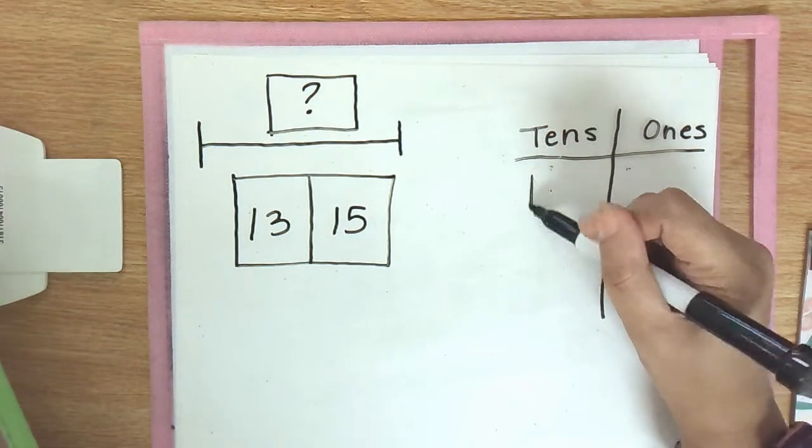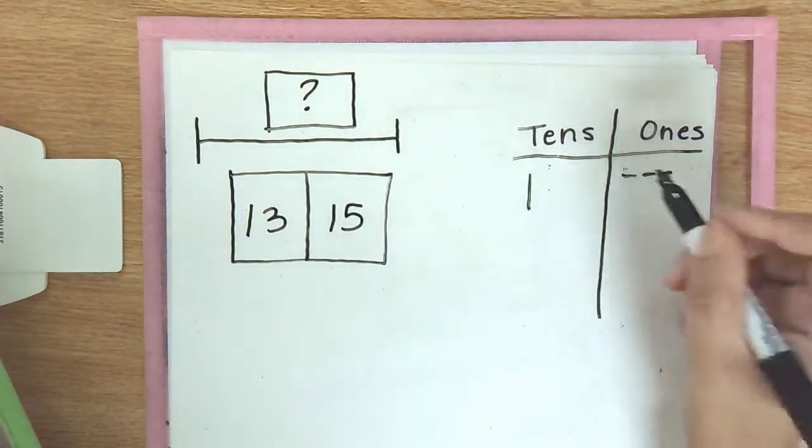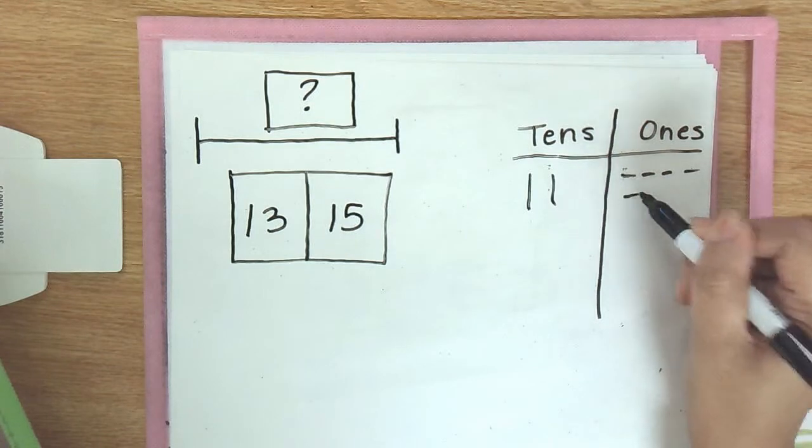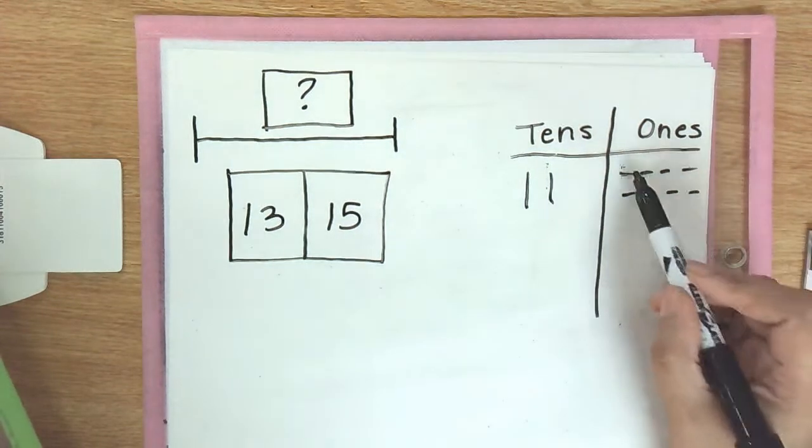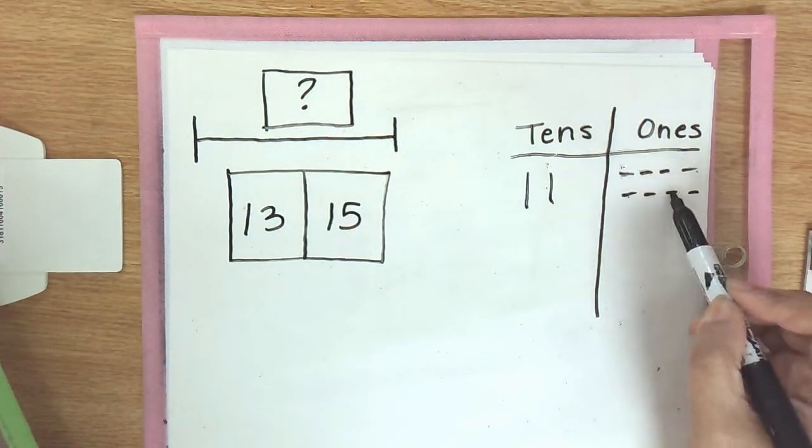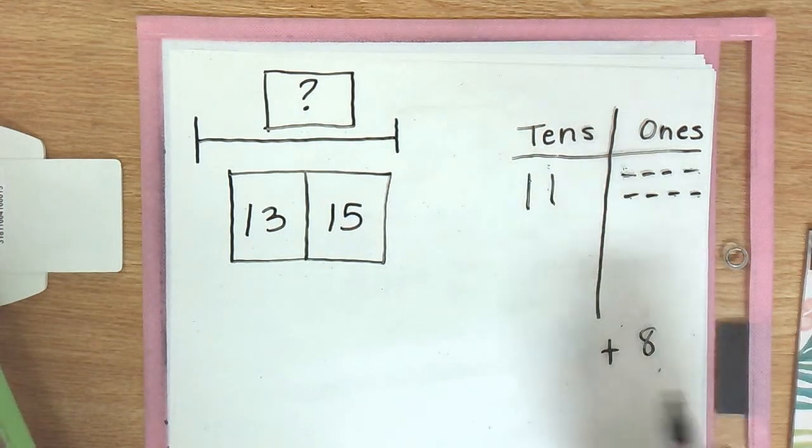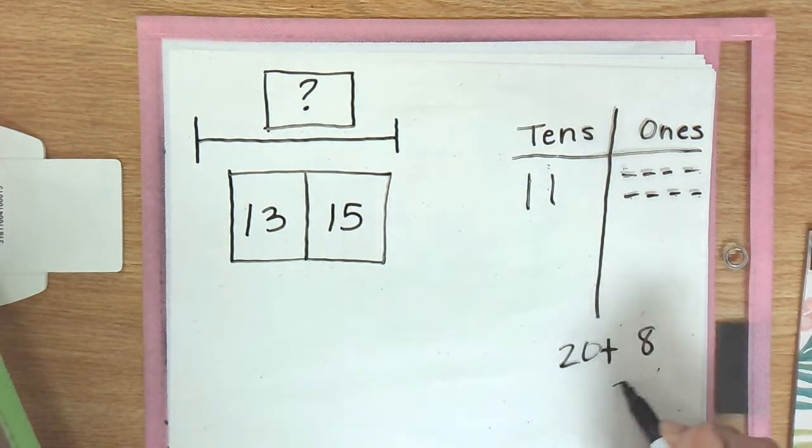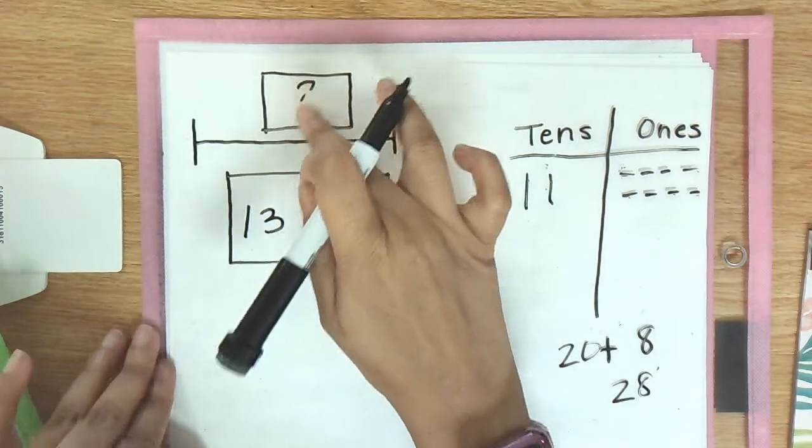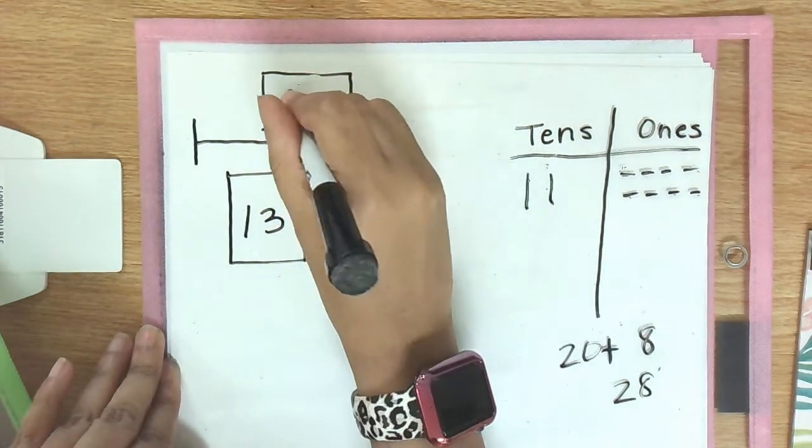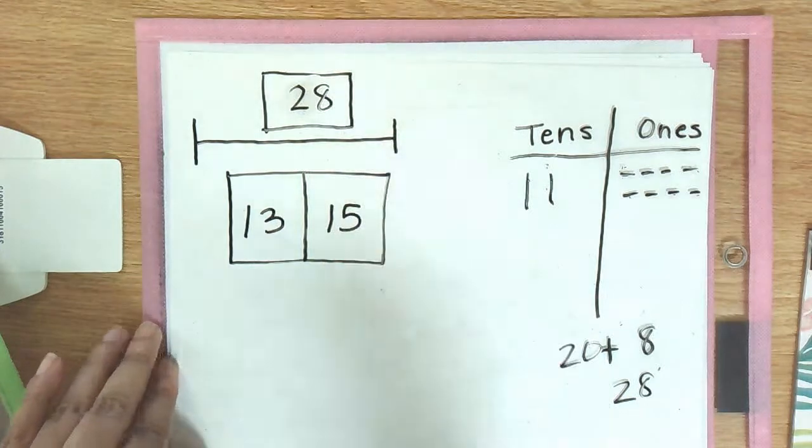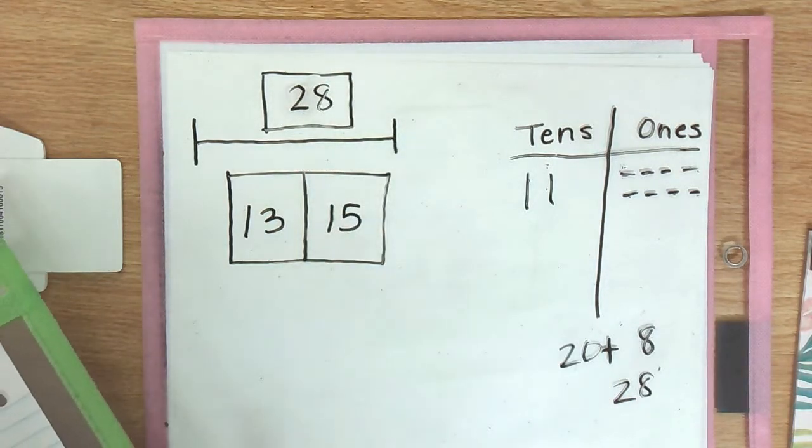And no matter which way I do it, 13 again: 1 ten, 3 ones. 1 ten, 5 ones. One, two, three, four, five, six, seven, eight, 2 tens equals 20. And my answer is going to be 28. So we can erase that question mark and know that our answer, which goes in that top box, is going to be 28.